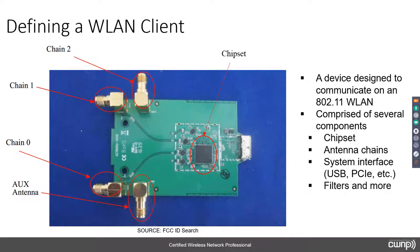Now let's get into our agenda. To define a wireless LAN client, I selected a particular adapter we'll look at in more detail later — a USB adapter that can be used with a laptop or desktop. It is an 802.11ac wave 2 adapter, though I call it an 'optional feature adapter' because in the standard there's no wave 1 and wave 2; there are simply required and optional features. I grabbed this from an FCC ID search — it's a picture of the inside of an Alpha AWUS 1900 adapter.